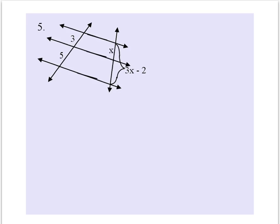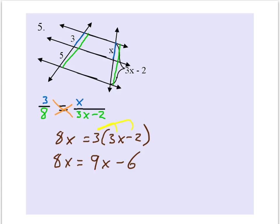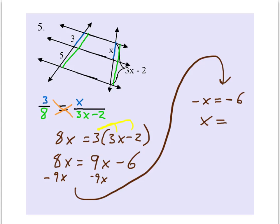Well, that shouldn't be too big a problem because we've got 3 and 5. So we can compare proportional parts by adding 3 and 5 together. And so then we'll just cross multiply to solve. So we get x equals 6.